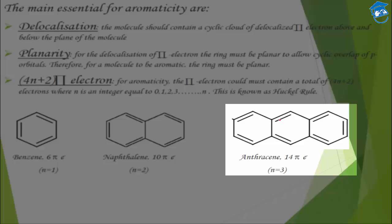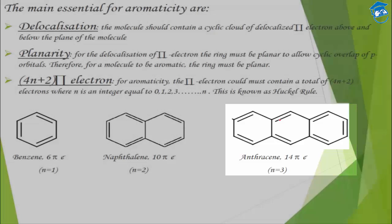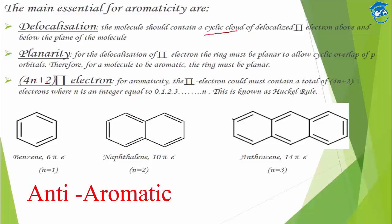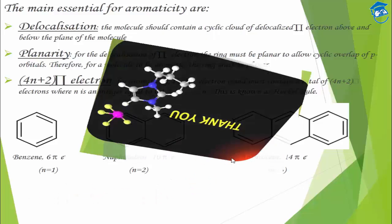In Hückel's rule, you check whether the molecule is cyclic, planar, and conjugated — because only then is delocalization into a cyclic cloud possible — and whether it has 4n+2 pi electrons. There is another concept: anti-aromaticity. If the pi electrons are 4n (not 4n+2), the compound is anti-aromatic — that means it is extra unstable, the opposite of aromatic. So 4n+2 pi electrons (cyclic, planar, conjugated) is aromatic; only 4n pi electrons is anti-aromatic.